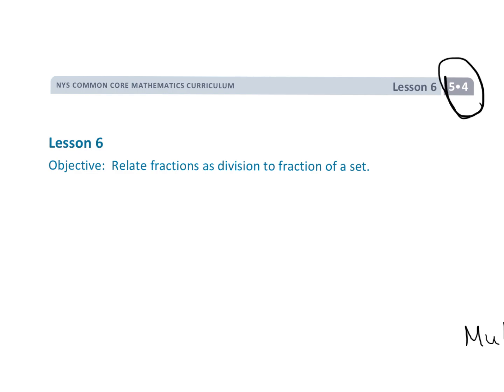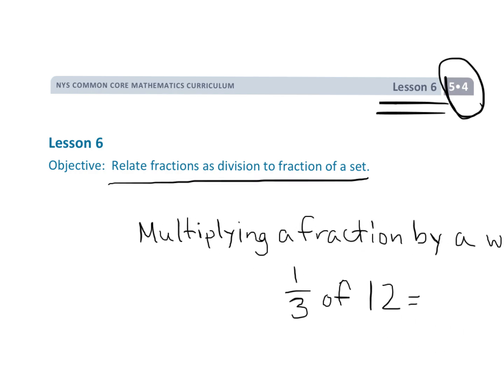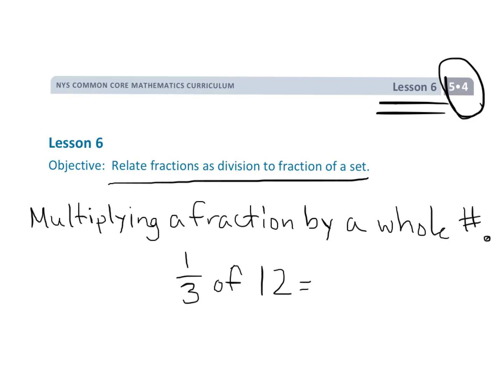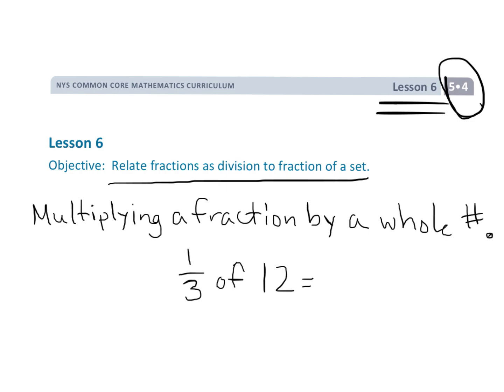Alright, this is 5th grade Module 4, Lesson 6, where we are relating fractions as division to fraction of a set. In the olden days, it would mean we're going to learn how to multiply a fraction by a whole number. For example, 1 third of 12.